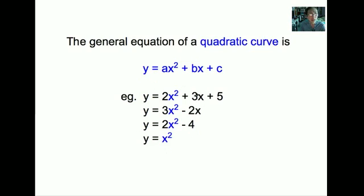The first curve has A equals to 2, B equals to 3, and C equals to 5. This curve cuts the Y-axis at 5. C is the Y-intercept. In the second curve, we do not have any Y-intercept; therefore it cuts the origin.